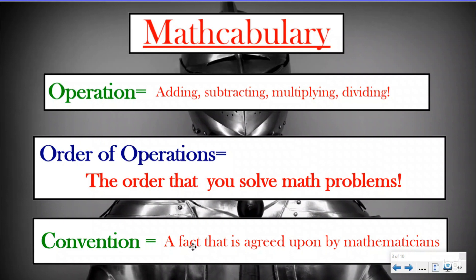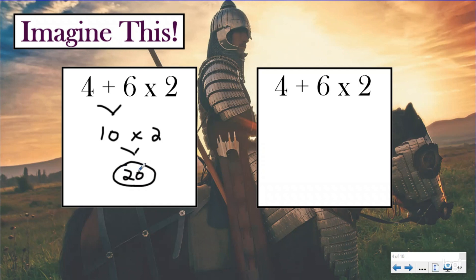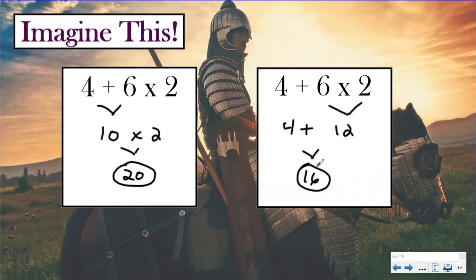Let's talk a little bit about why these words are important. I want you to imagine this: you are a messenger going from one king to the next. Both kings were presented with the same problem — four plus six times two. Your king solved it by doing four plus six first, got 10, then multiplied by two and ended up with 20. The other king did the multiplication part first and got four plus 12, which is 16. So as you're taking this message, you know there's going to be a disagreement.